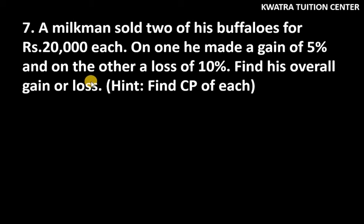Hello everyone, let's start with question number seven. A milkman sold two of his buffaloes for Rs. 20,000 each. On one he made a gain of 5% and on the other a loss of 10%.